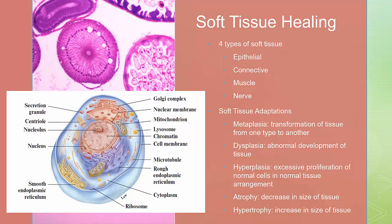Soft tissue adaptations. We have metaplasia, which is the transformation of tissue from one type to another that is not normal for that tissue. Dysplasia is an abnormal development of tissue. Hyperplasia is an excessive proliferation of normal cells in normal tissue arrangement. Atrophy is a decrease in the size of tissue due to cell death and reabsorption or decreased cell proliferation. And hypertrophy is the increase in tissue size without necessarily changing the number of cells.